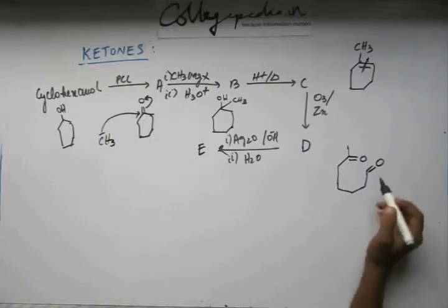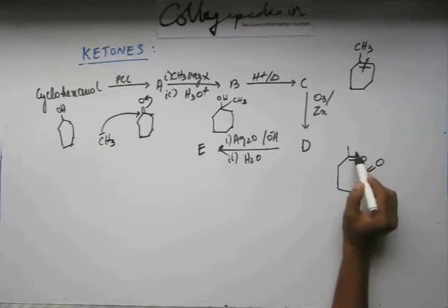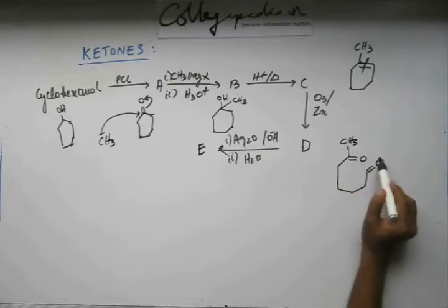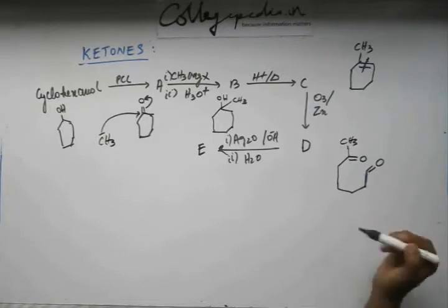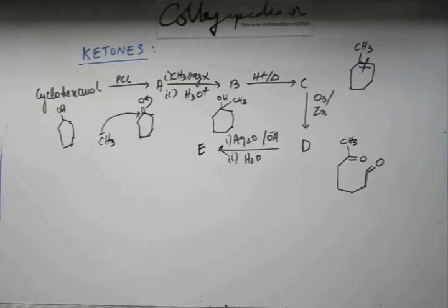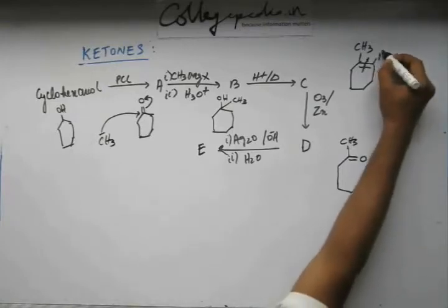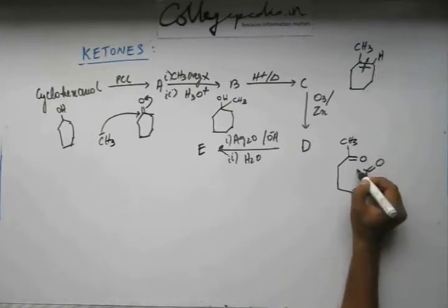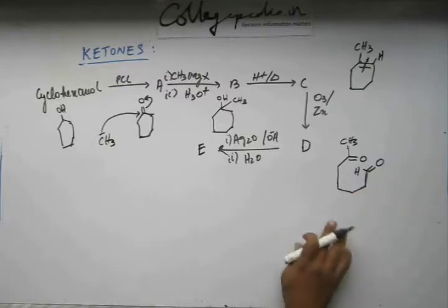Now if you can see, there is a ketonic group. This C double bond O has this methyl on one side, carbon on both sides. Now this is a ketonic group. This is an aldehyde group. This has carbon on this side. On the other side there is no carbon, there is hydrogen. So this carbon is having valency three as you can see. So the fourth valency is fulfilled with hydrogen because this carbon is having one hydrogen here. So this is the aldehyde group. So this is D.